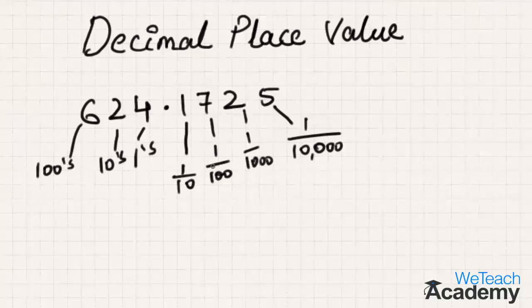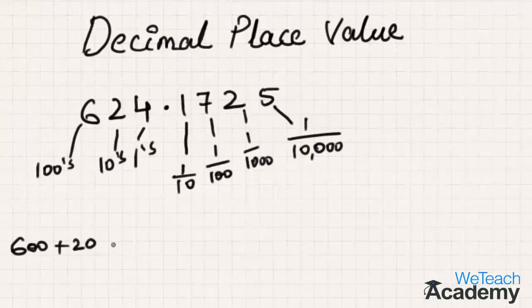In the decimal part, the place value increases by a factor of 1/10 each time you move to the right. The expanded form can be written as: 6 in hundreds place becomes 600, 2 becomes 20, and 4 in units place is written as 4. In the decimal part, 1 in the 1/10th place becomes 1/10.